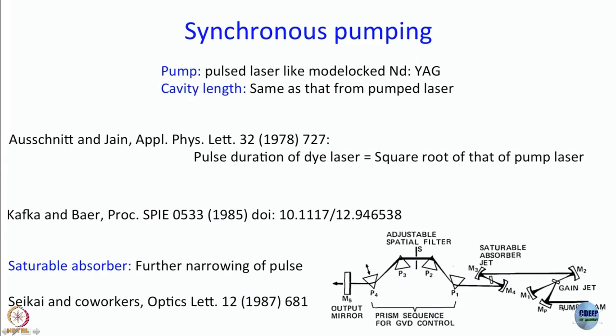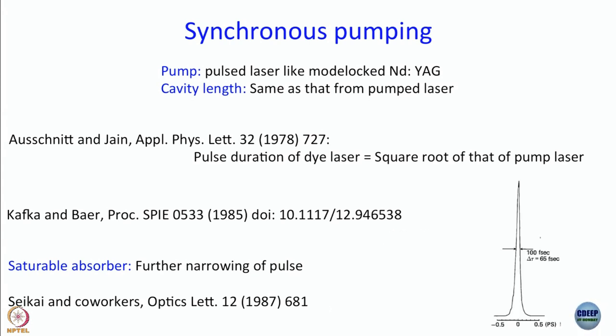Here you have the gain jet and also a saturable absorber jet — DODCI, once again circulated in the same manner. This is already pulsed, and you know how good the pulse can be — 220 femtoseconds or something. By introducing this saturable absorber, is there any improvement? The full width at half maximum is now 65 femtoseconds — down from 220 femtoseconds.